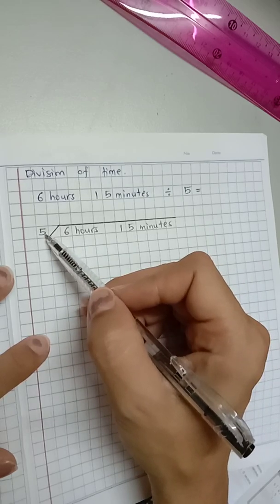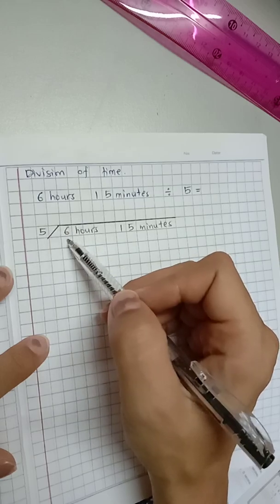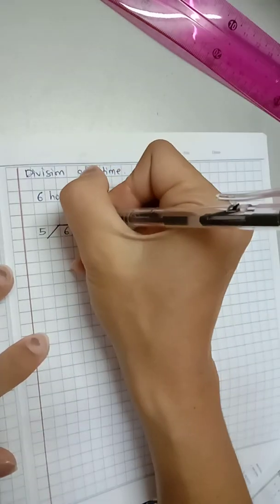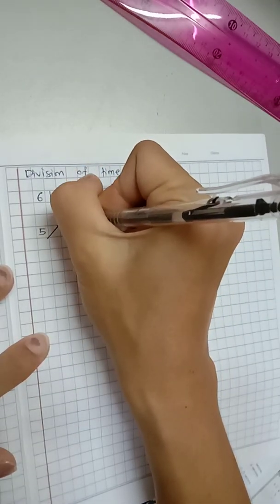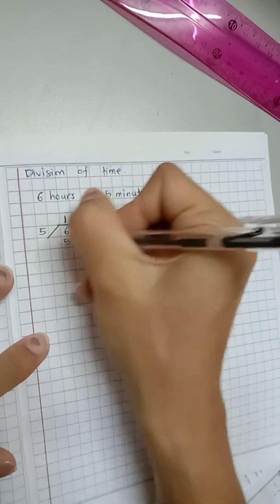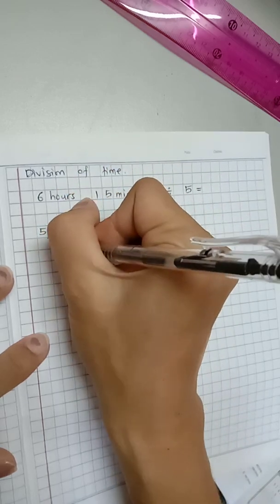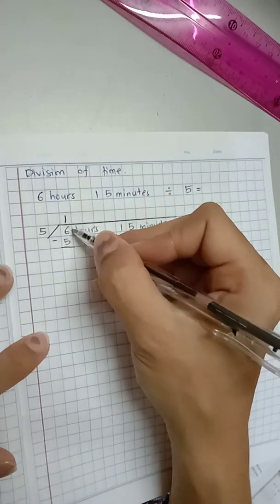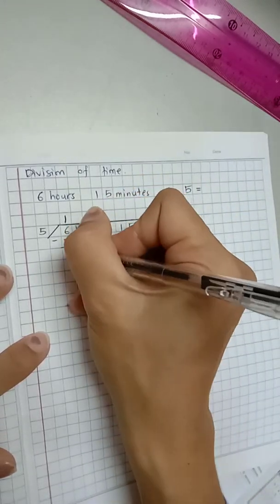Yes, 5 times 1 is 5. So we choose 5 times 1 is 5. Let's find the remainder. 6 minus 5 is 1.